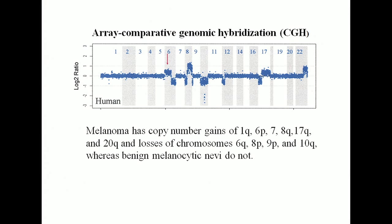This started in the 1990s when ArrayCGH became available. ArrayCGH is a technology that allows you to look broadly across the genome for copy number gains and deletions. Rather than doing FISH probes to see if something has amplified or deleted, you can use these DNA arrays. In Boris Bastian's work, melanoma copy number gains were found to be repetitive on 1Q, 6P, 7, 8Q, and 17Q, with losses at other listed sites. These variations were not seen in nevi, so here we had a genetic marker to distinguish melanoma from nevi.